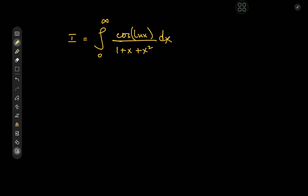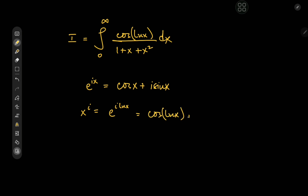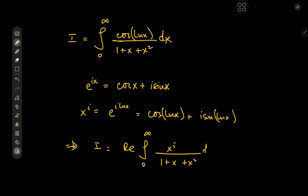So how do we begin the solution development? We have cosine(log x), so let's work with that. Recall from Euler's beautiful formula that e^(ix) equals cosine x plus i times sine x. We know that x^i is actually e^(i times log x), so that means we get cosine(log x) plus i times sine(log x). This means the target integral I is simply the real part of the integral from 0 to infinity of x^i divided by 1 plus x plus x squared, dx.